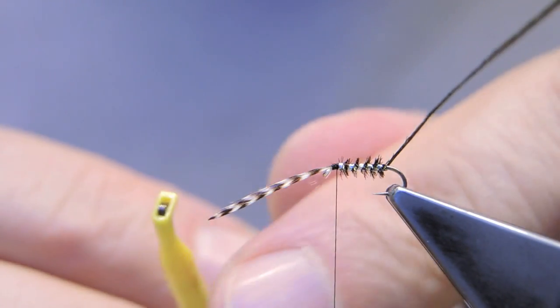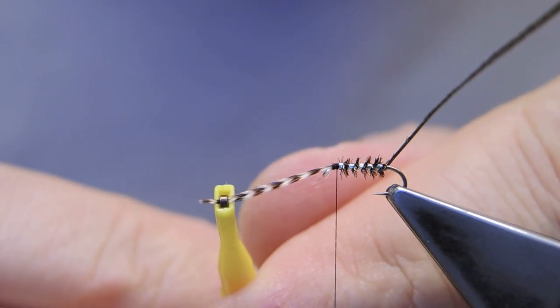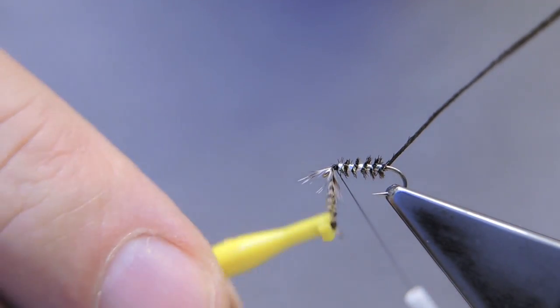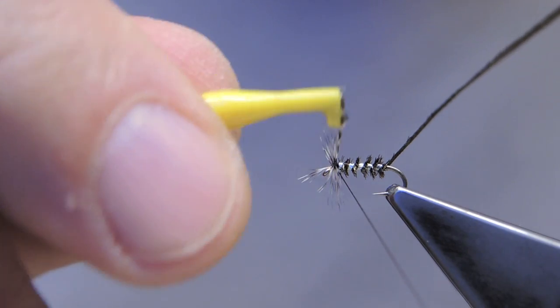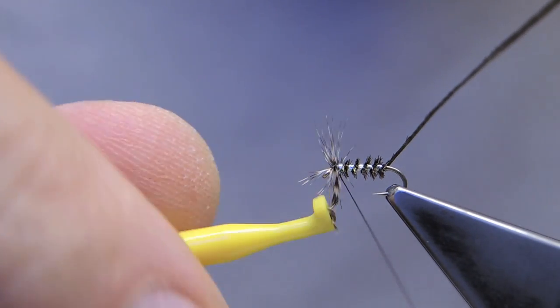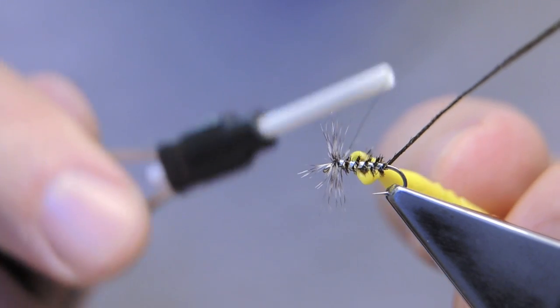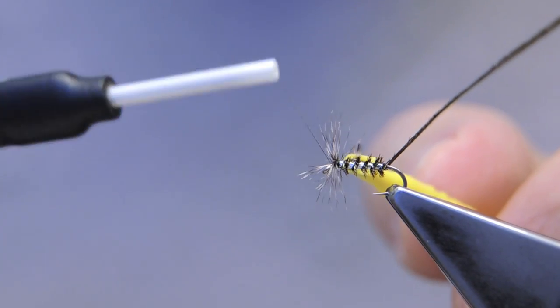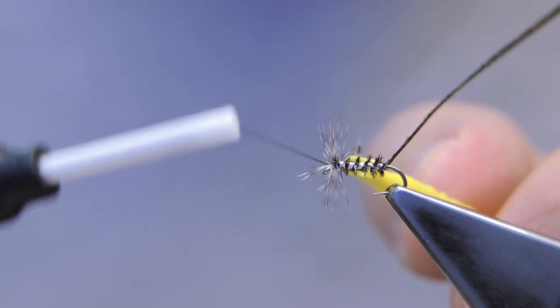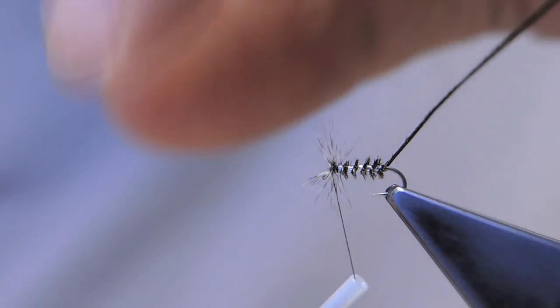Clip on the hackle pliers onto the hackle and wrap a collar. Trap the tip, cut through to the front, snap away the tip.